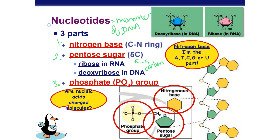Let's look at the nitrogen base for a second. These are our nitrogen bases over on the right side of the image. The pentose sugar, or 5-carbon sugar, is shown in green. In DNA, that pentose sugar is called deoxyribose; in RNA, it's called ribose. The phosphate group is represented by the little circle. That phosphate group has all these negatives on it, giving DNA an overall negative charge — which will be really important later when we do DNA fingerprinting and gel electrophoresis.